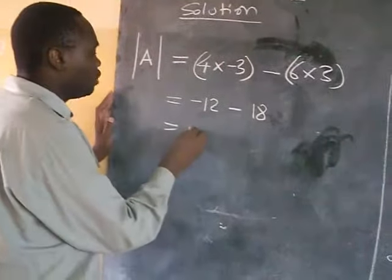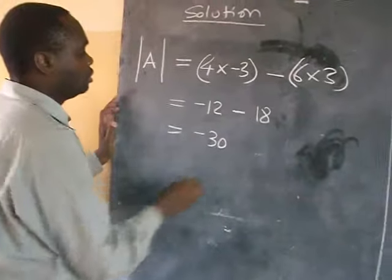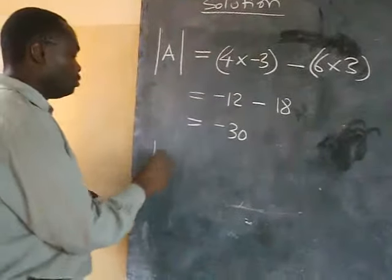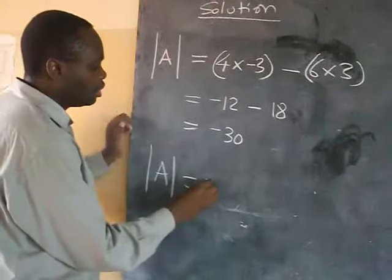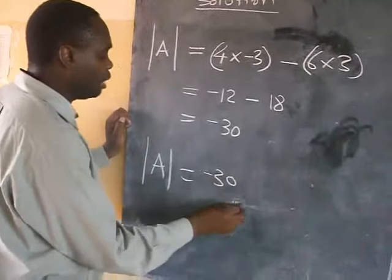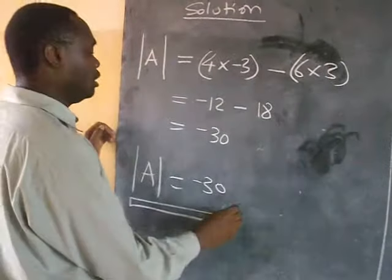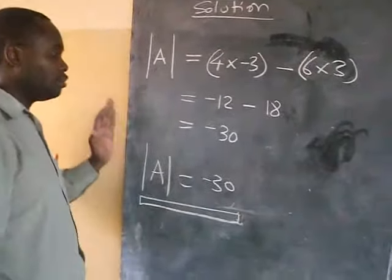When we add them together, we are going to get negative 30. So, up to this moment, we already have our determinant. Our determinant is negative 30.